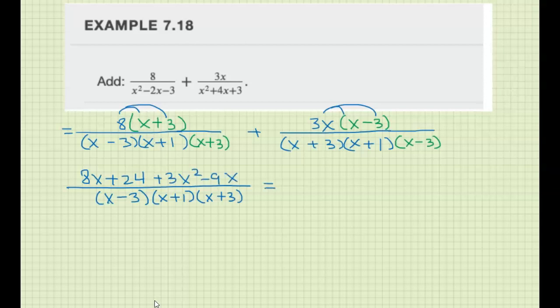Now we are going to simplify the numerator, combine like terms, factor, and see if anything cancels. We have 3x squared, 8x minus 9x is negative x, plus 24, divided by x minus 3, x plus 1, x plus 2.